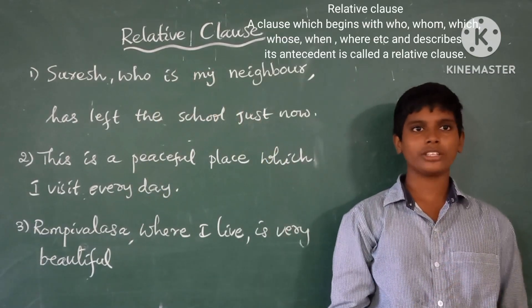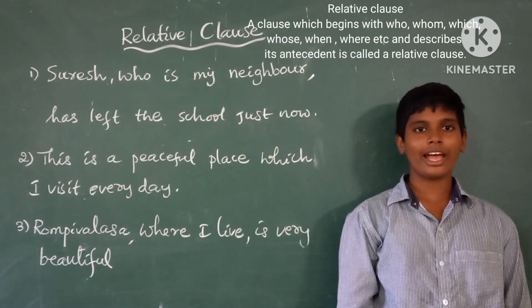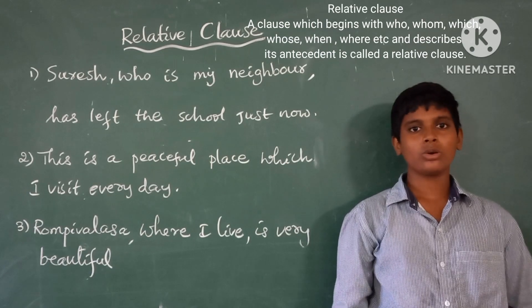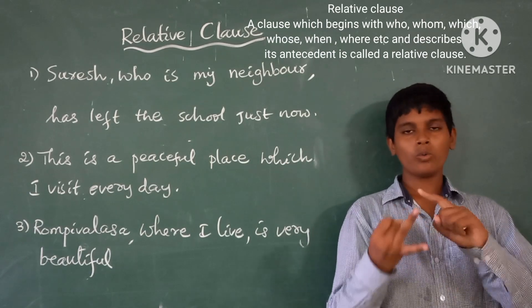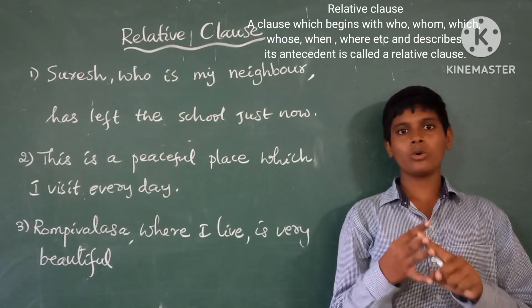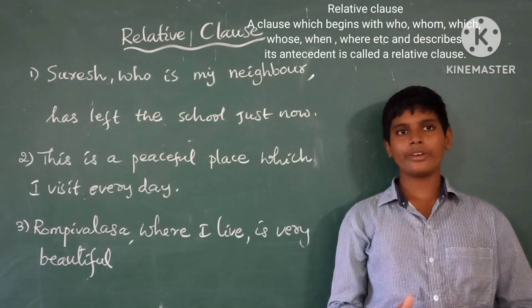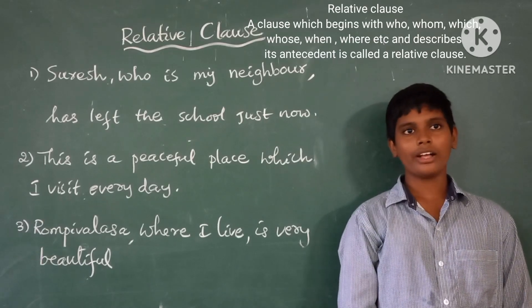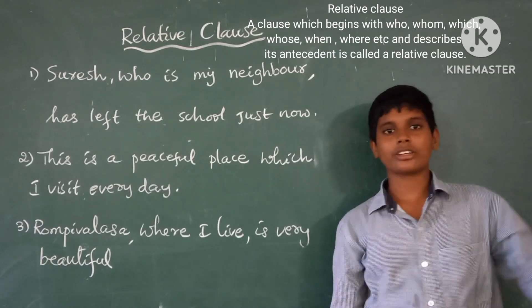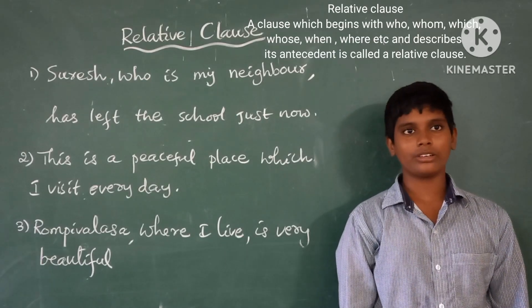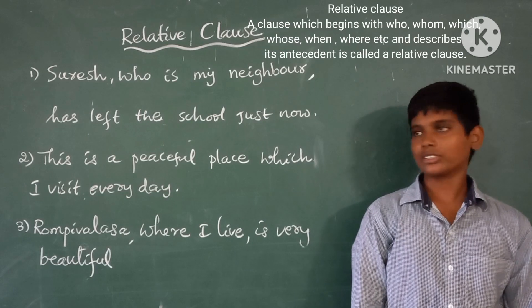What is a Relative Clause? A clause which begins with who, which, whose, whom, where, when, etc., and describes its antecedent. Some examples.